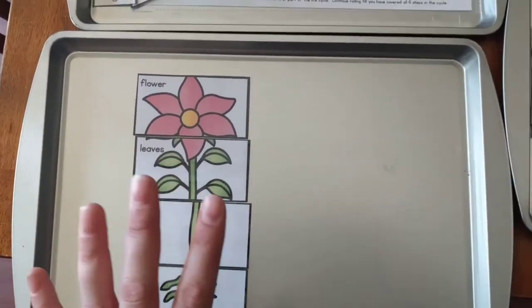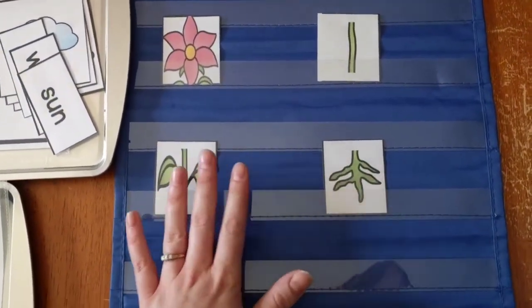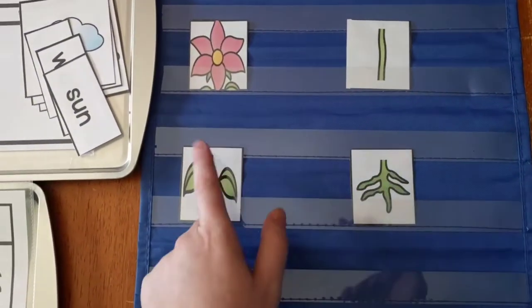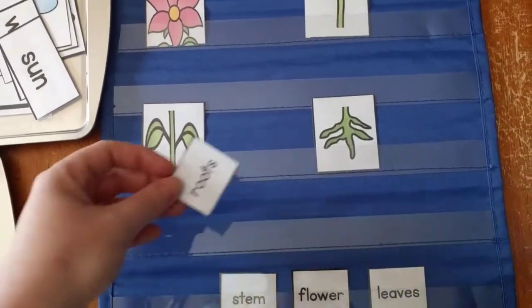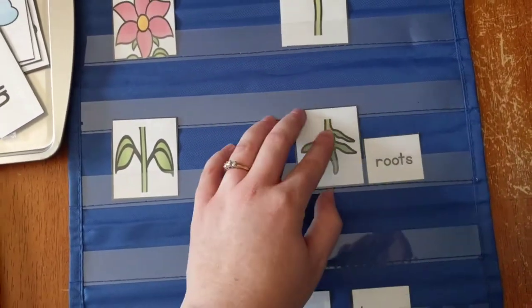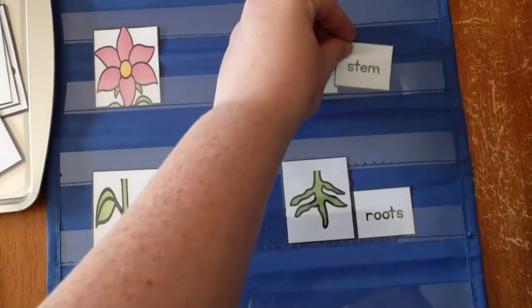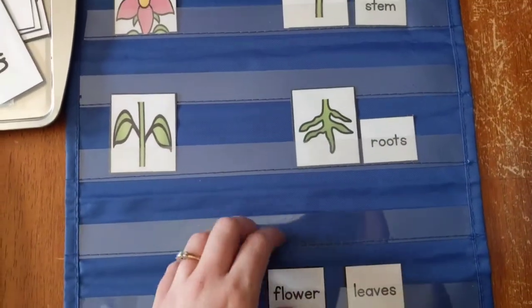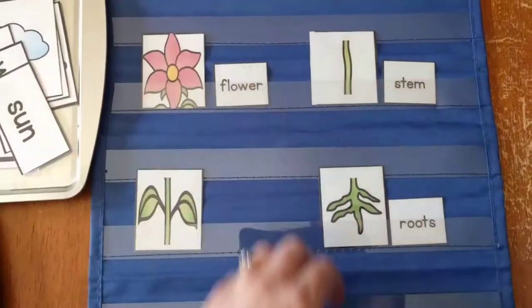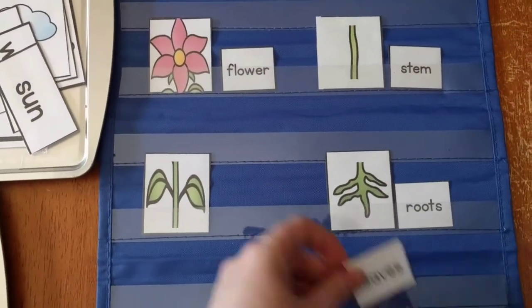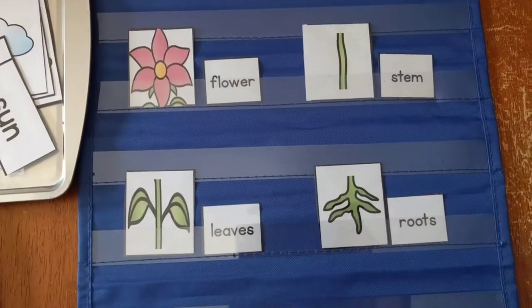In that same vein, parts of a flower, I also have this. This is a tiny little pocket chart, and it's going to have these cards and then the word cards, and they just have to match them up. So roots would go here with that picture, and then we're going to match up stem, and then we're going to match up flower, and then we're going to match up leaves. You don't have to do it in a pocket chart, but I like to do it like that.